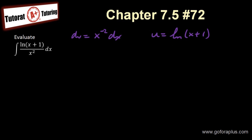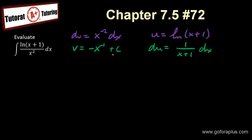Now if my u is equal to ln of x plus 1, I know that my du is going to be 1 over x plus 1, times dx. And then my v here is going to be minus x to the minus 1 plus c, which is basically minus 1 over x plus c. Now following my integration by parts formula: uv minus integral of v du, I have something like this.